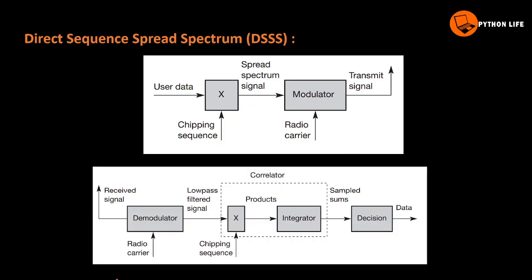The DSSS diagram has a transmitter side and a receiver side, similar to FHSS. The main change is the chipping sequence. The chipping sequence is applied to the user data, and modulation handles the transmission. On the receiver side, the chipping sequence is used for demodulation.